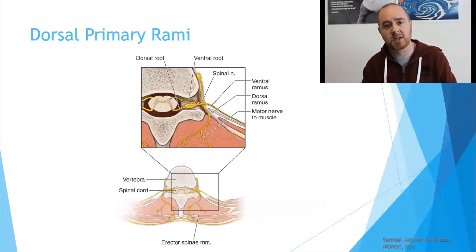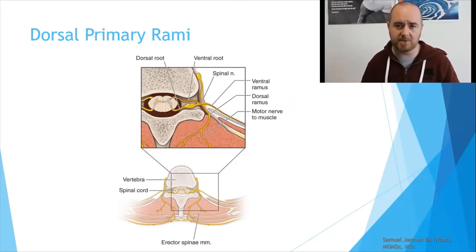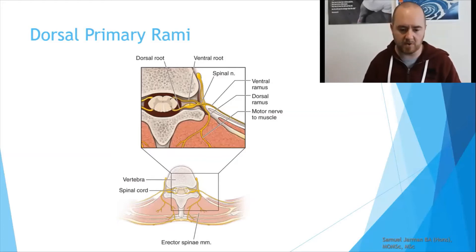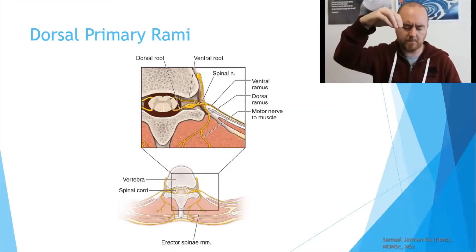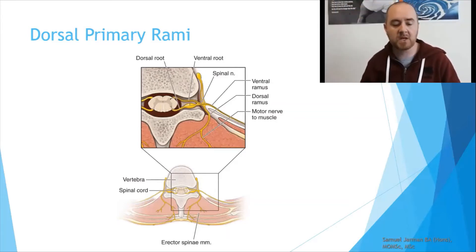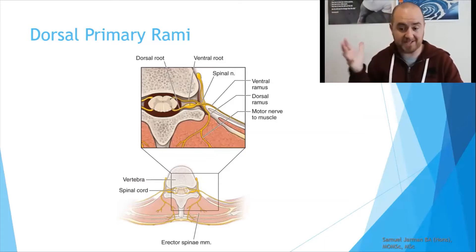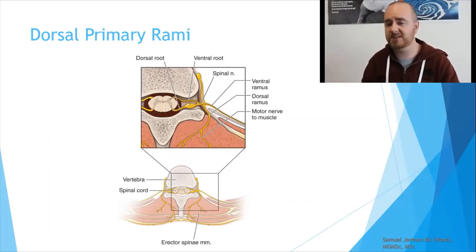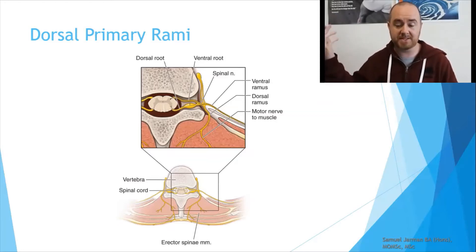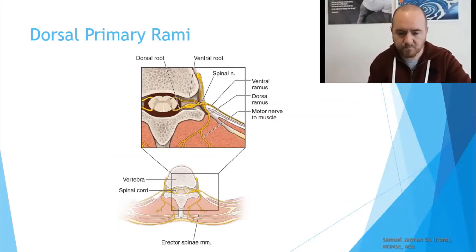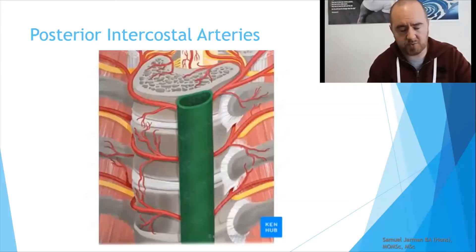For sensation around the vertebral column and motor innervation to the muscles attached to it, you're almost always talking about the dorsal primary rami — or posterior primary rami — of a mixed spinal nerve. It exits the vertebral column and loops back posteriorly into the vertebral muscles, providing motor innervation to the erector spinae. Consistently when discussing extension — cervical, thoracic, or lumbar — we refer to the dorsal primary rami as both motor to vertebral column muscles and sensory along the vertebral column.